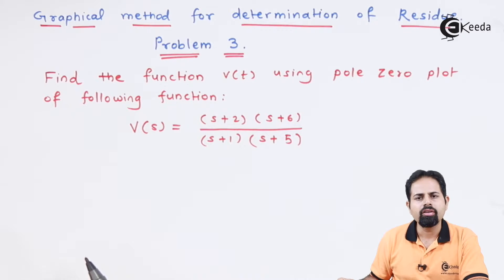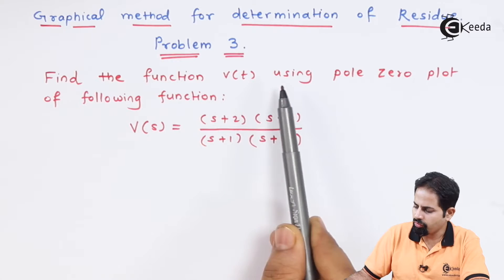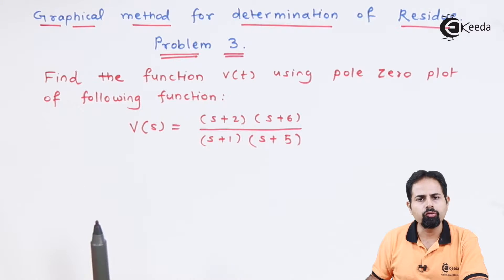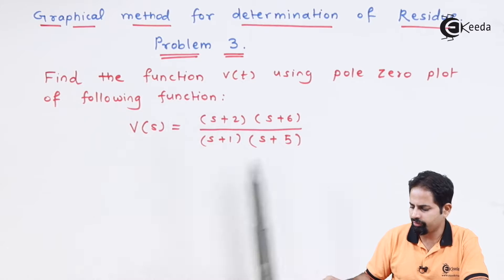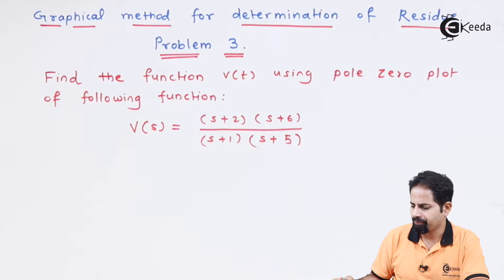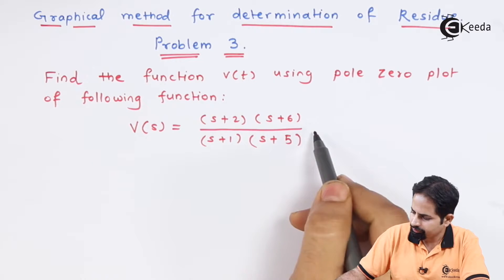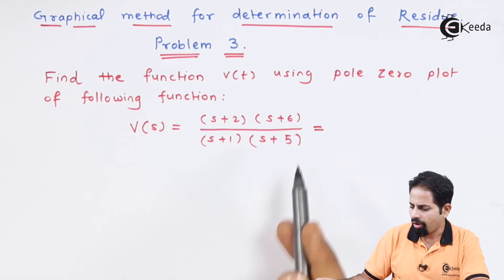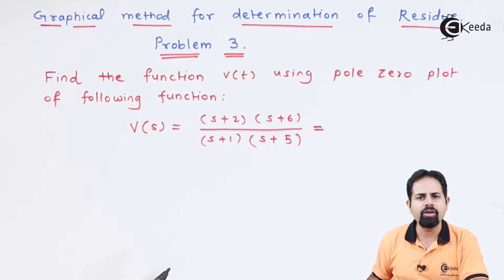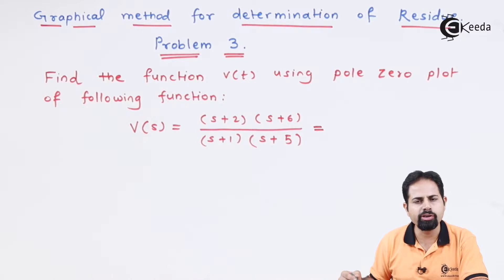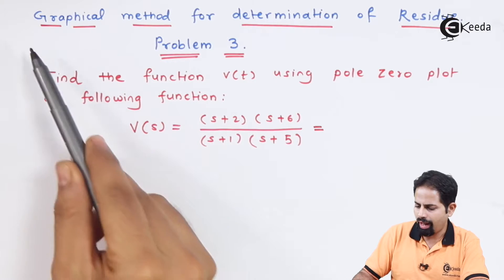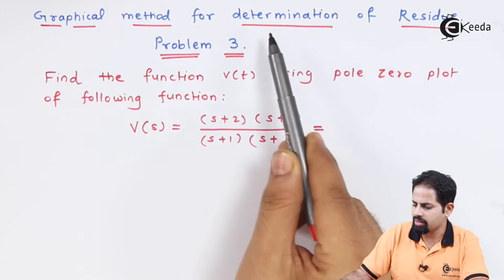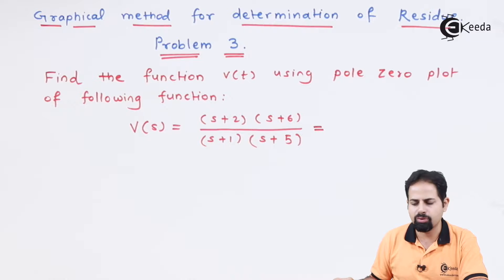The question is we have to find a function v of t using a pole-zero plot, which we have to draw from a given function. After expanding this function, we may get some polynomial, from which we will draw the pole-zero plot, and from that pole-zero plot, as our topic says, we have to determine the residues.